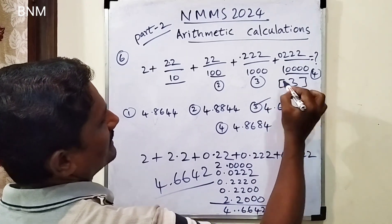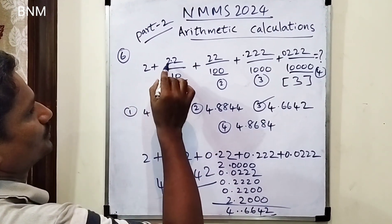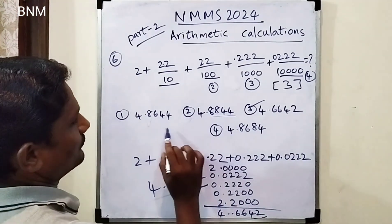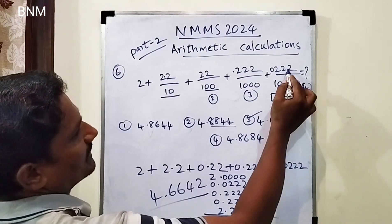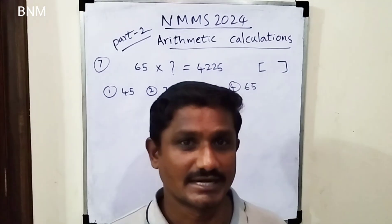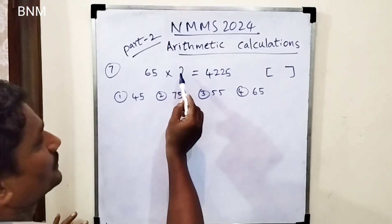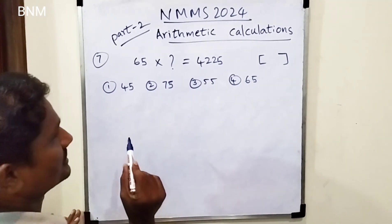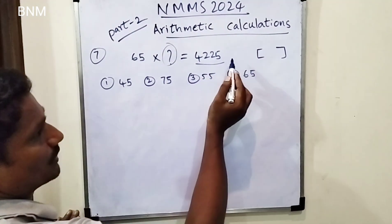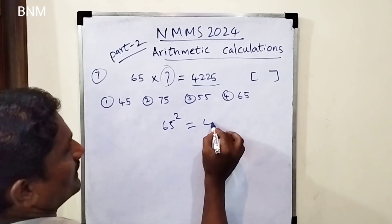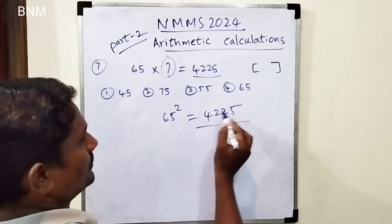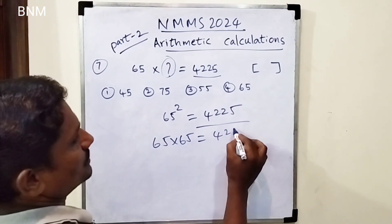Thread 1 — this is the right answer. It is simple: 2 plus 2 is 4. There are 4 decimal places. The right answer for the next 2nd bit: 65 times question mark equals 4,225. In the question mark place, what number do we multiply? This is 65 squared: 65 × 65 = 4,225.